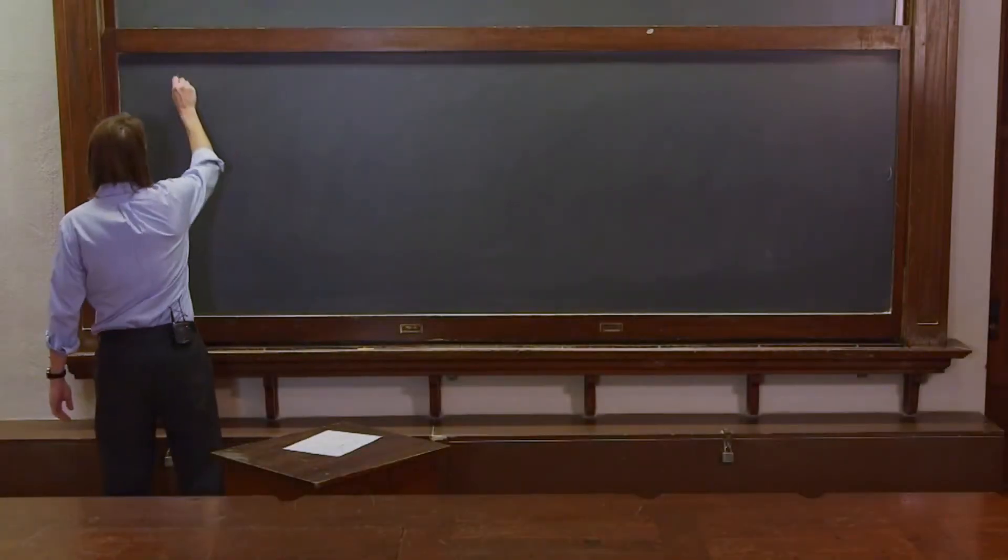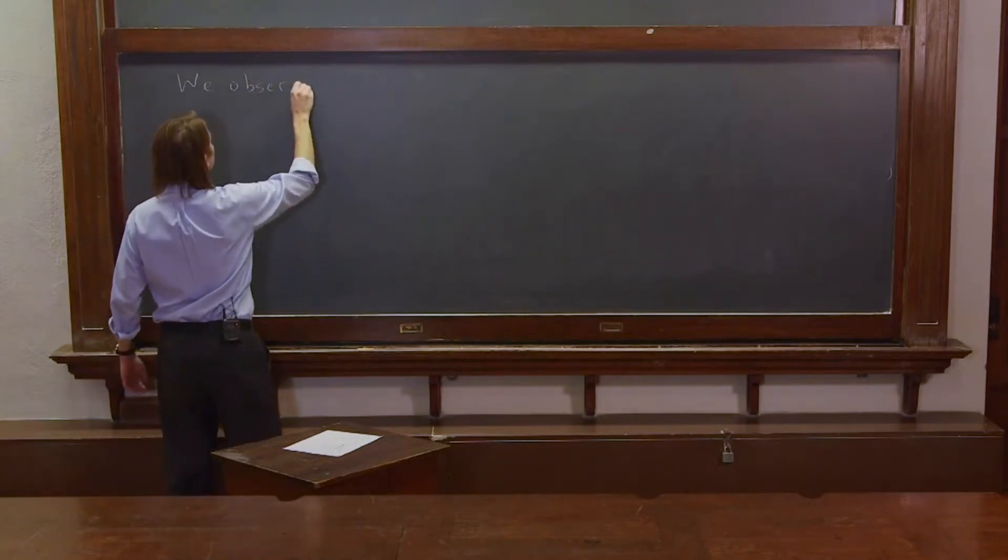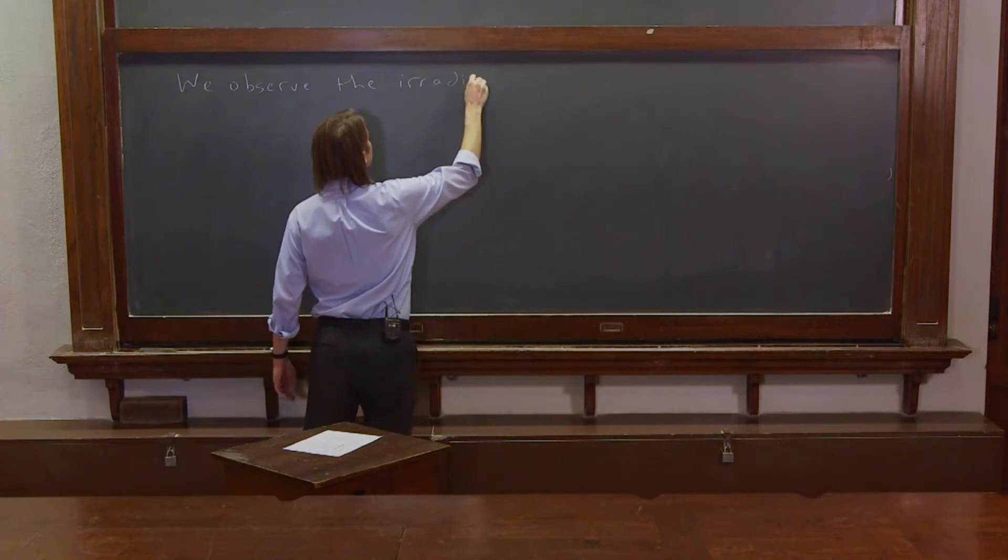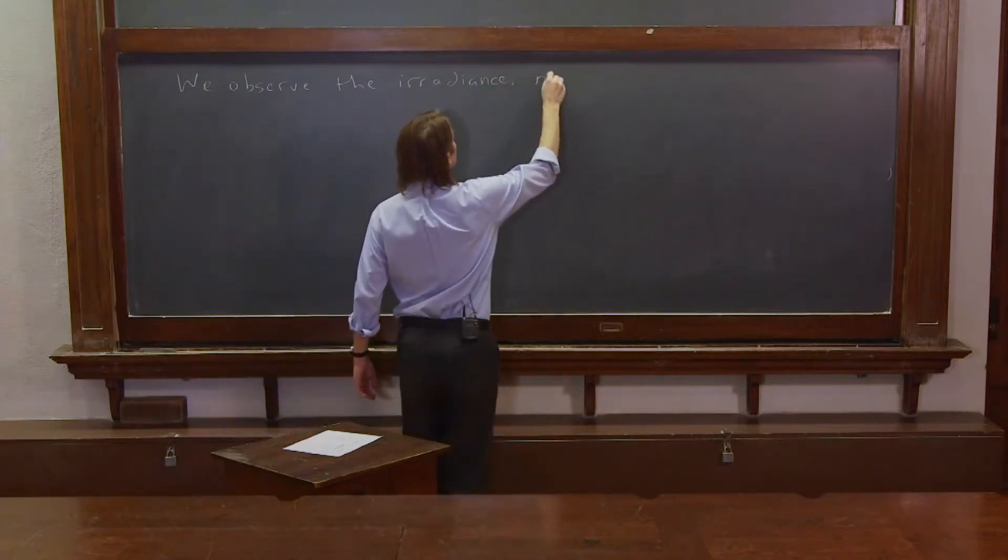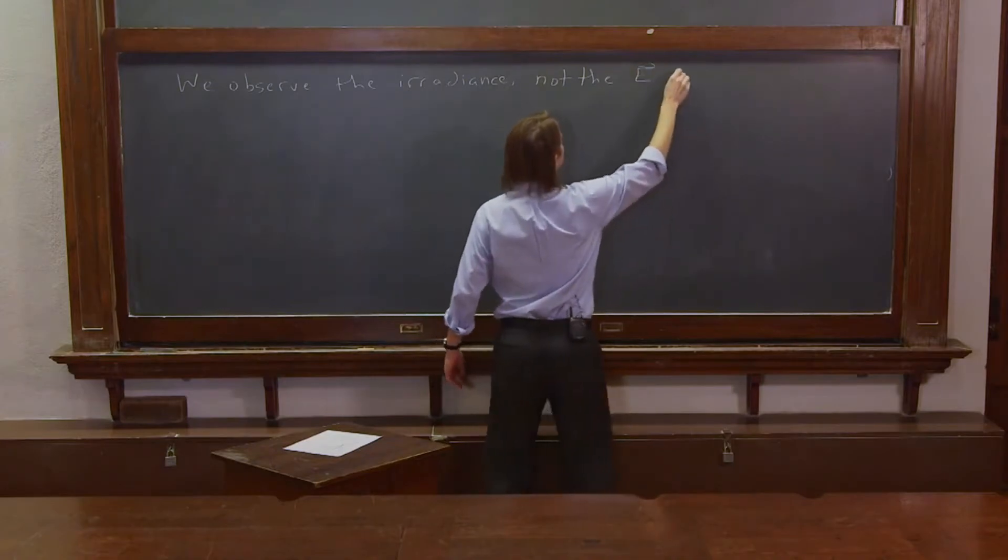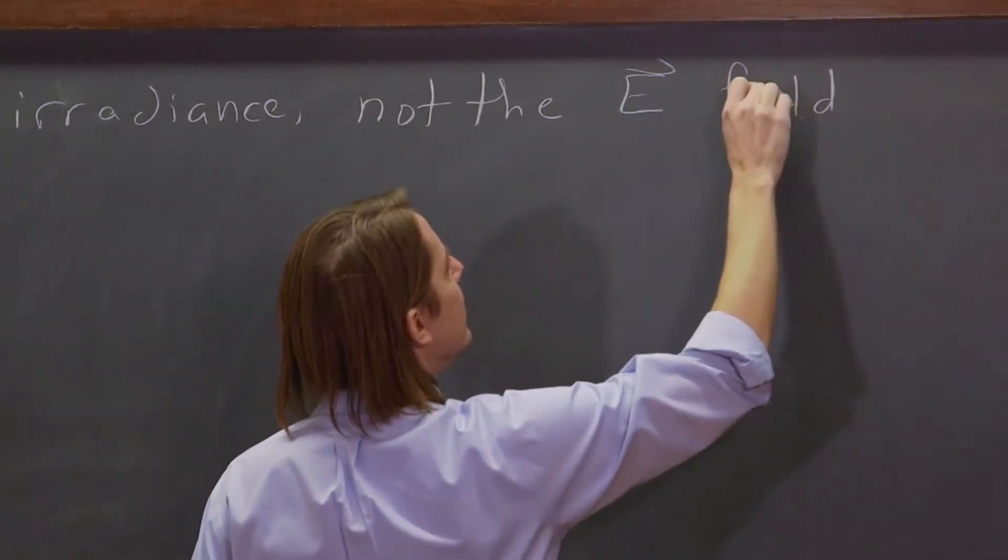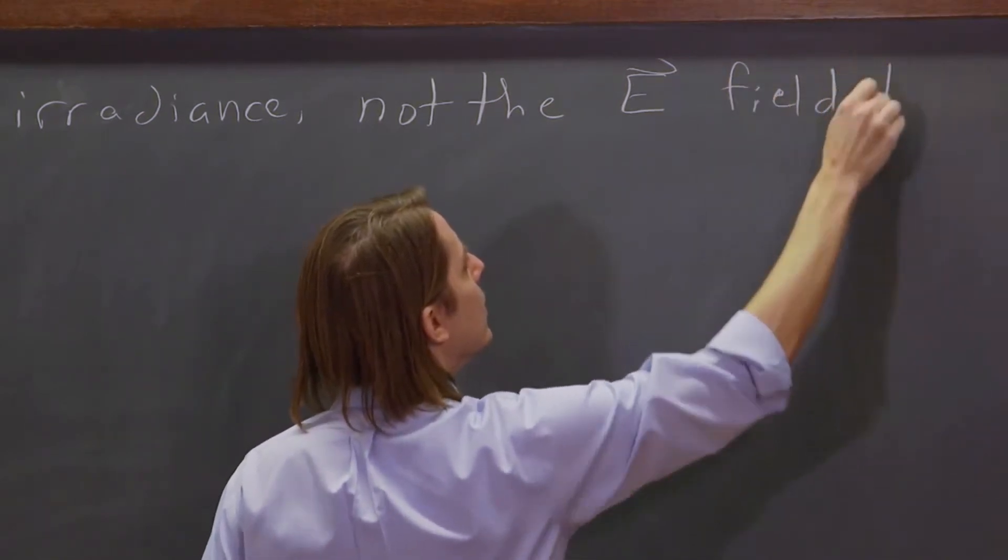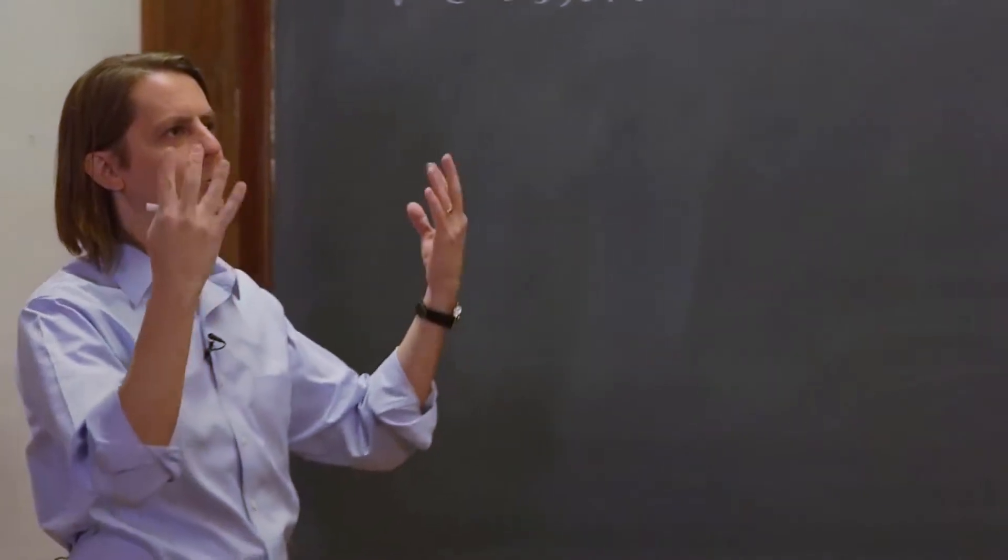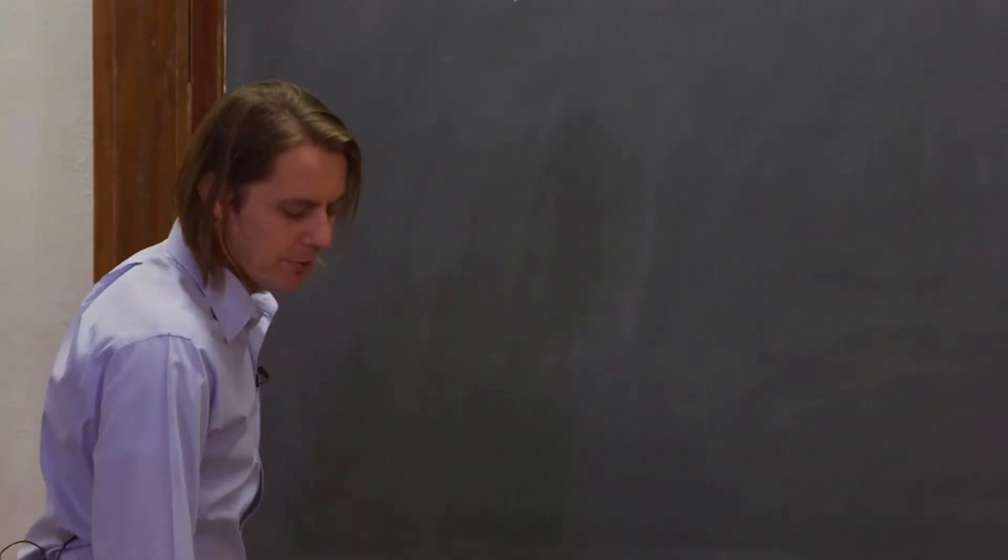Here's the problem. We observe the irradiance, not the E field. If we could see the E field, it wouldn't be so bad. But you can't see the E field. All you can do is absorb energy from the electromagnetic field. And the energy is irradiance.